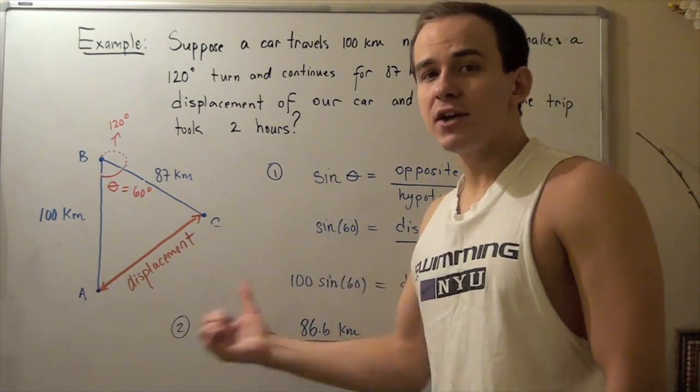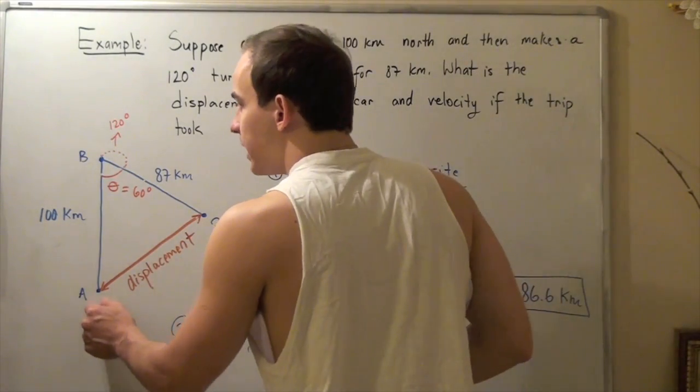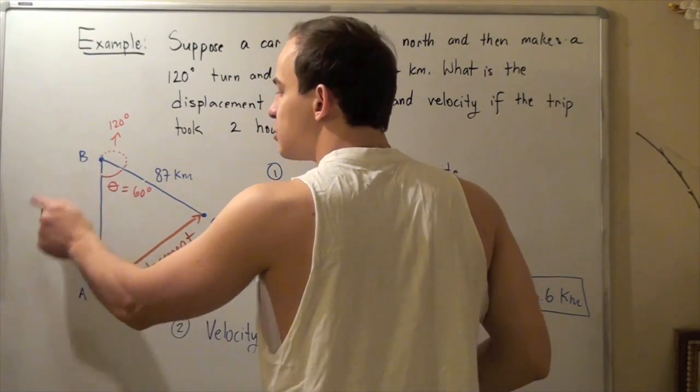Let's first draw our diagram for the trip. Our car traveled from point A to point B 100 kilometers. This length is 100 kilometers.